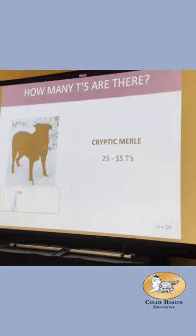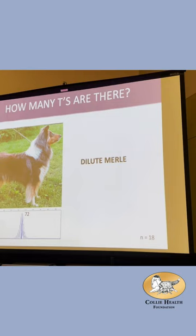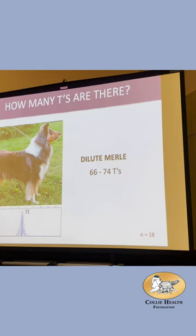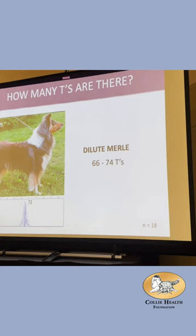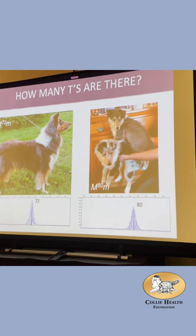When we looked at cryptic merles — 19 in our study — they all had 25 to 55 T's, much less. When we looked at dilute merles — 18 in our study — they had 66 to 74 T's, in between the cryptics and standards. I met a dilute dog and her brother; the brother had 80 T's and she had 72 T's — in her germline she lost 8 T's, and those 8 T's made the difference.